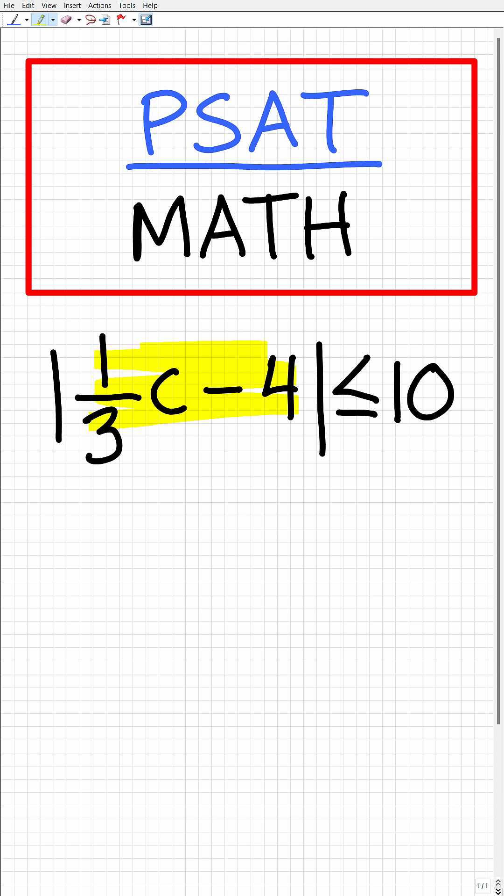Basically what we want to do is take everything inside of the absolute value function. Now, this is assuming that the absolute value function is isolated on one side of the inequality. So in this particular case, it is. We're going to take everything inside of this absolute value function and surround it by this inequality right here.